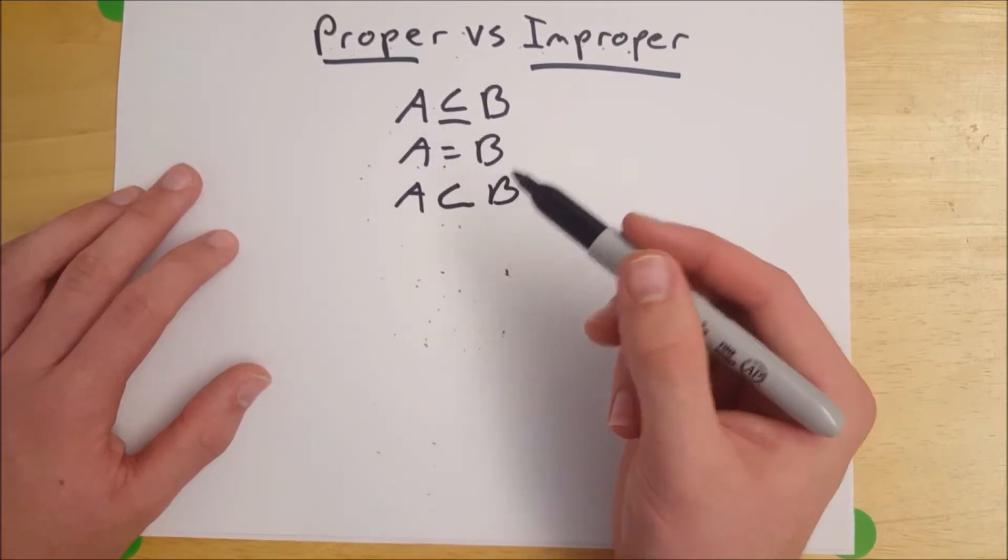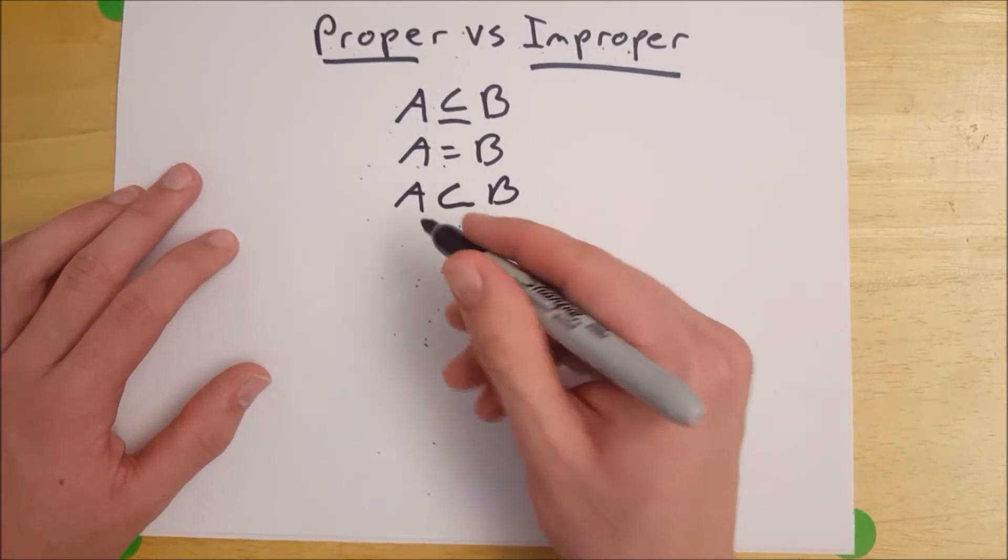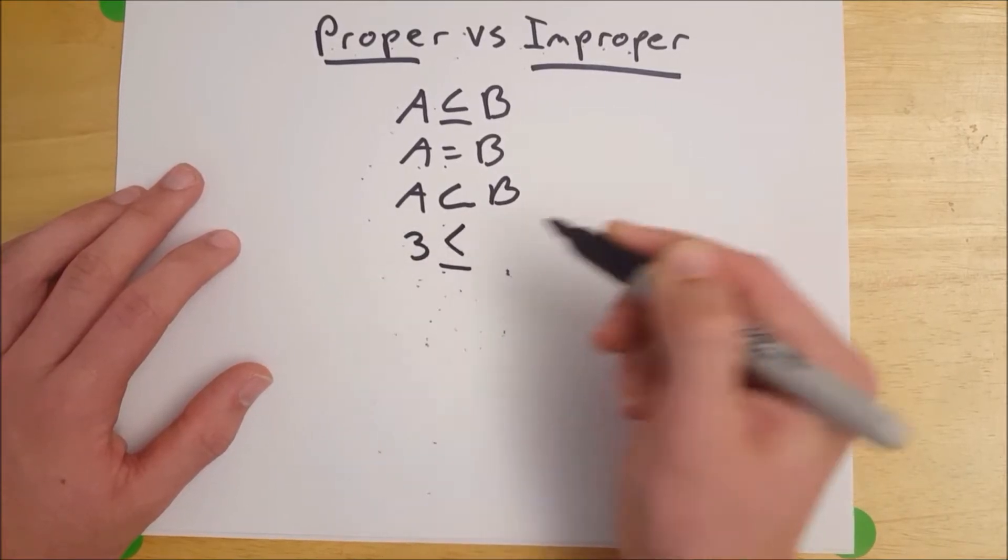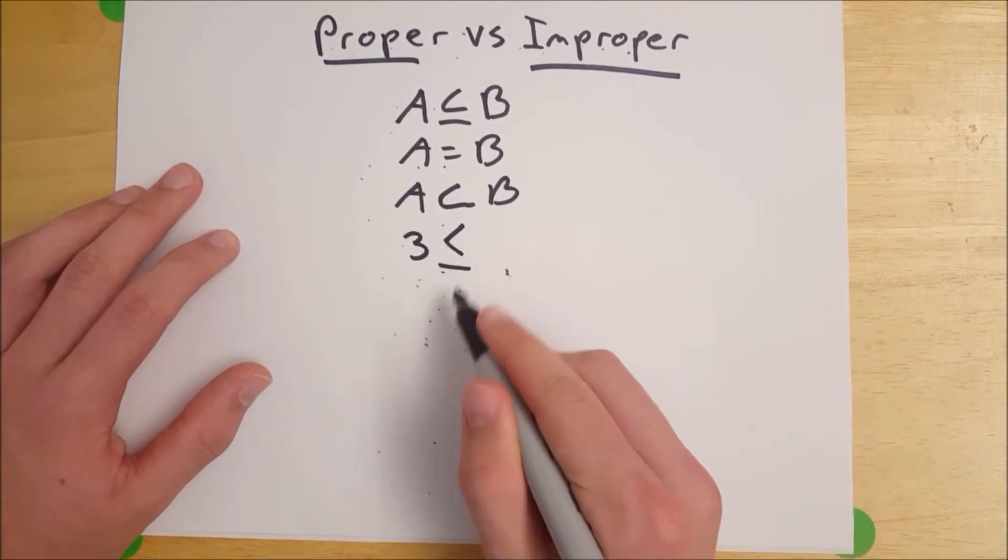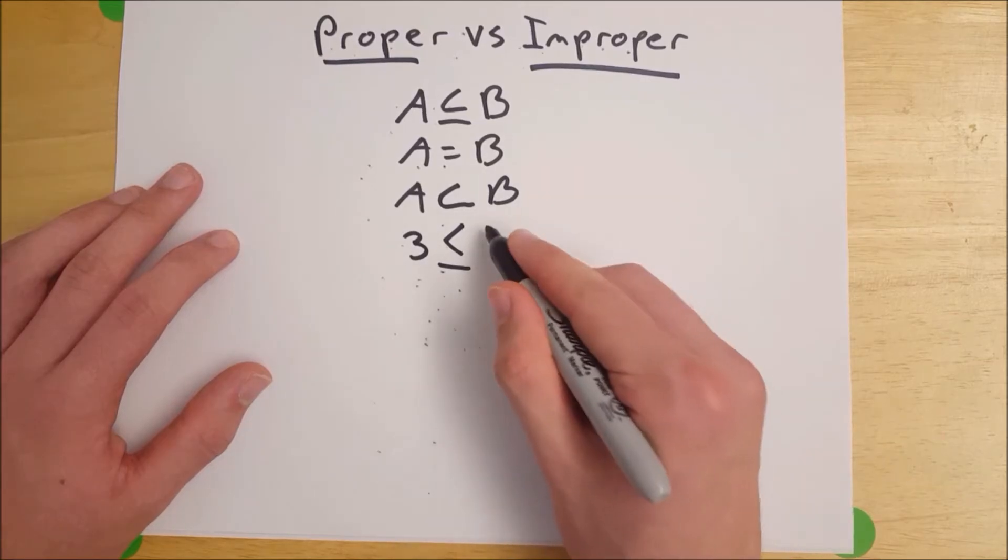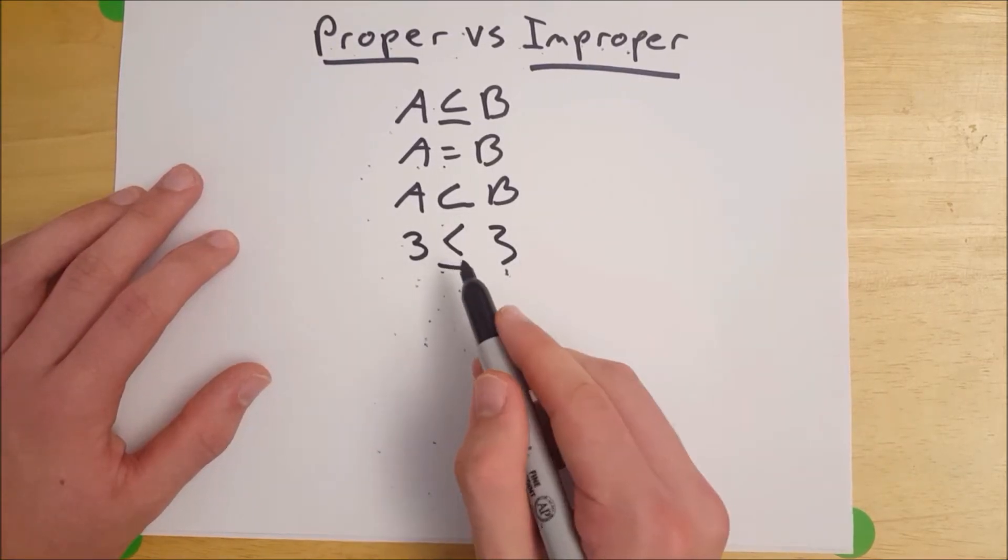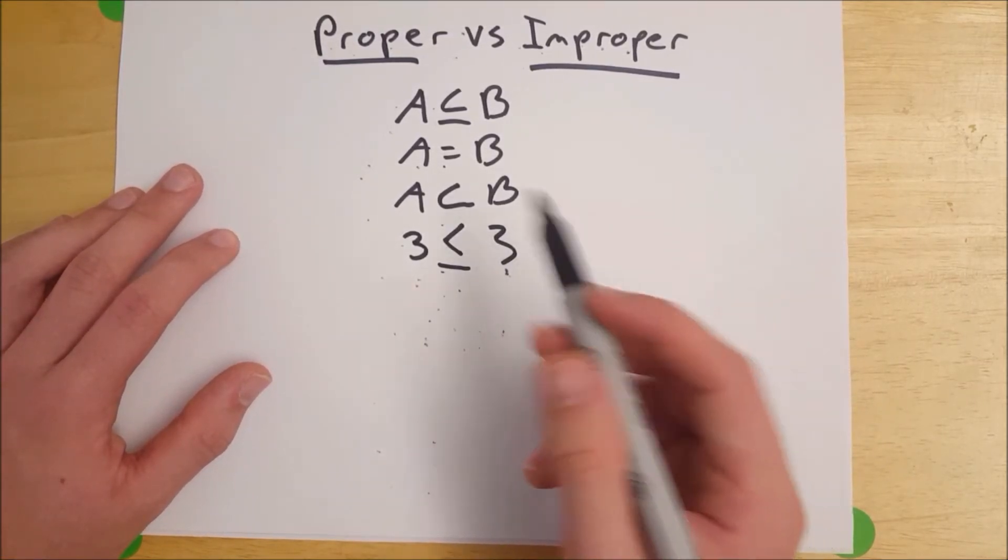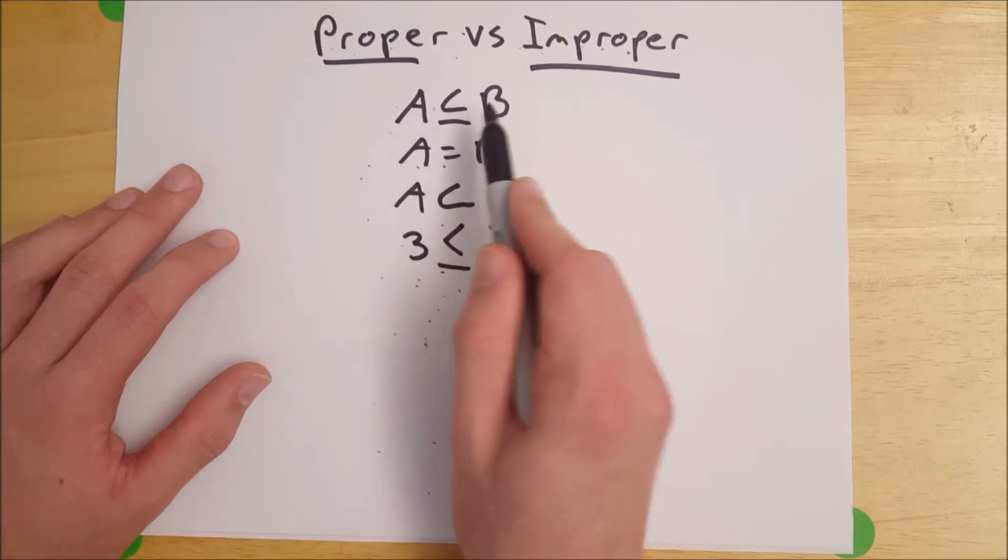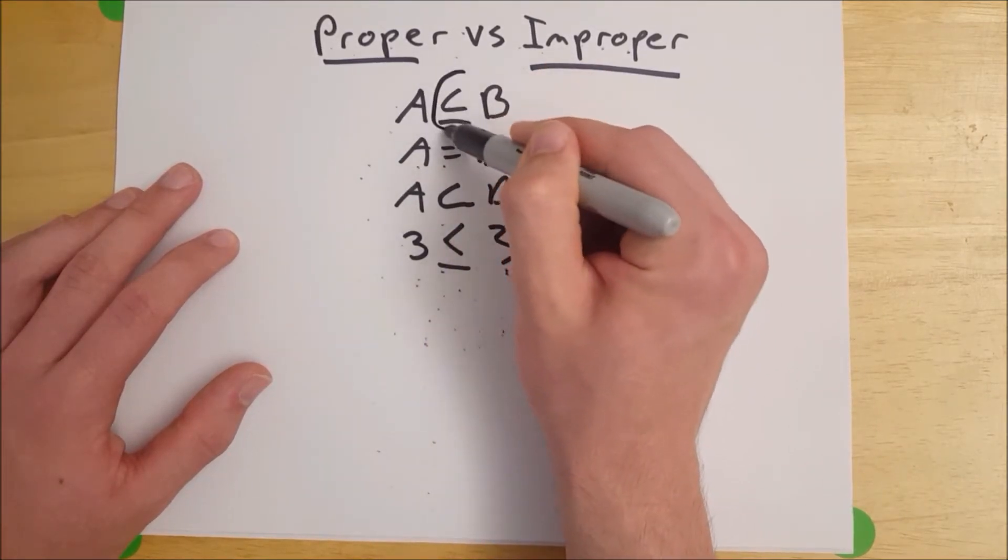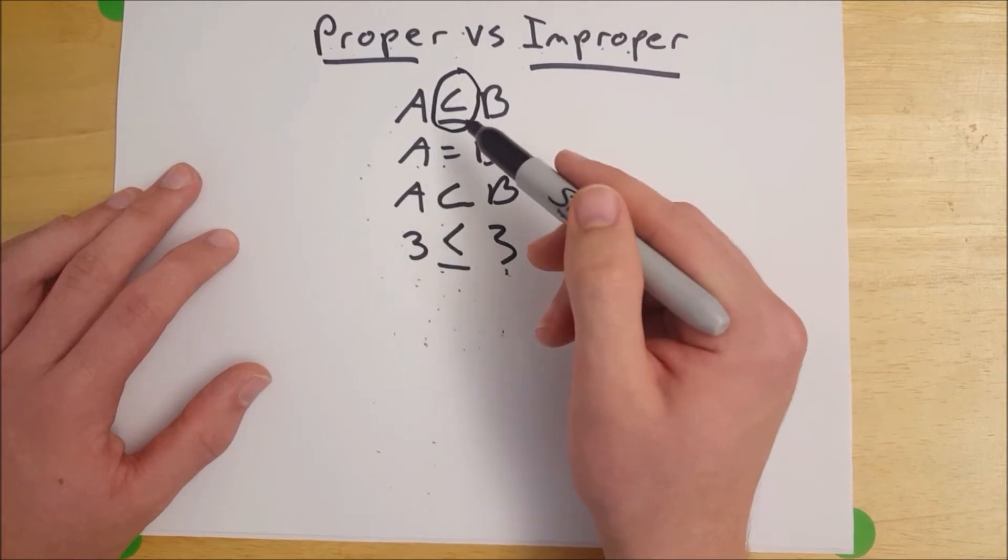So you can see that's similar to the inequality signs that you use where you put a line underneath it to say that it's less than or equal to. So 3 is less than or equal to 3, and A is either a proper or improper subset of B when we use that symbol. We don't know.